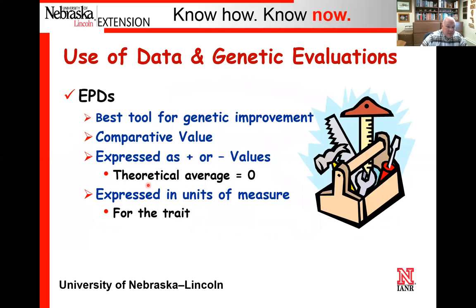A better tool is EPDs—expected progeny differences—and for all practicality they're the best tool we've got currently for genetic improvement. They're a comparative value, typically expressed as either positive or negative values, and the theoretical average for every trait is zero. The current average may not be zero because we've made genetic progress over time, but theoretically it started at zero when these EPDs were established two or three decades ago. EPDs are always expressed in the unit of measure—for example, weaning weight in pounds of calf, marbling score in units of marbling scores, fat in inches of fat cover.